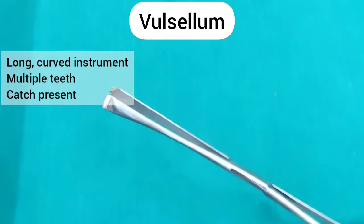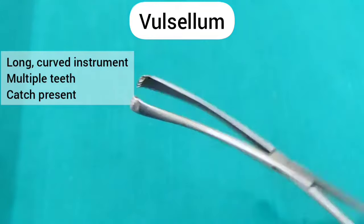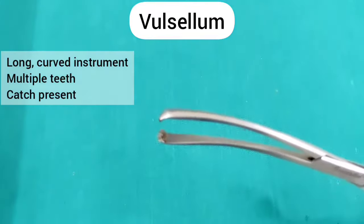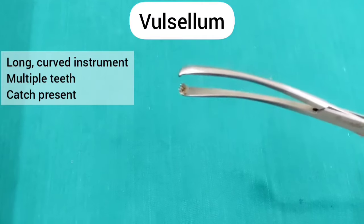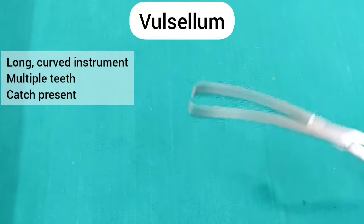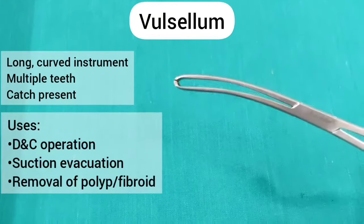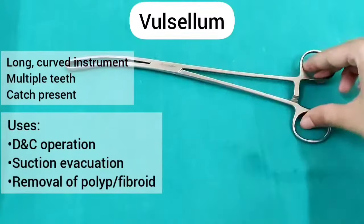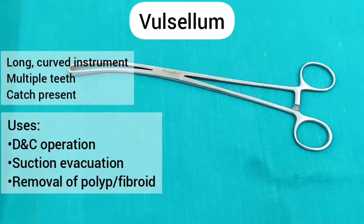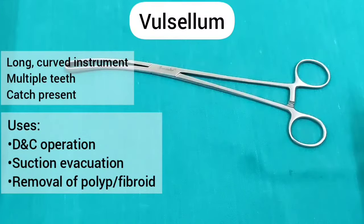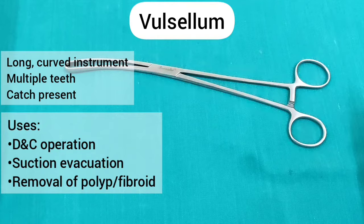This is a multiple tooth vulsellum. It is a long curved instrument. You can see the multiple teeth on both the blades. It has a catch. It is used in D&C operation, suction evacuation, and in the removal of polyp and fibroid.